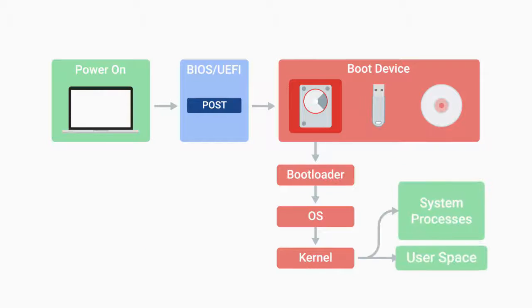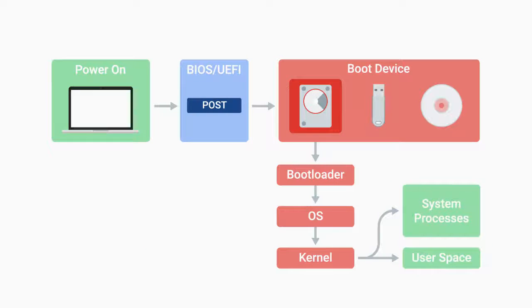Next, essential system processes and user space items are launched. These include processes like user login, spinning up a desktop environment, and more, which basically allows us to interact with our system. And that's it — after these simple steps, you'll be able to get to work.